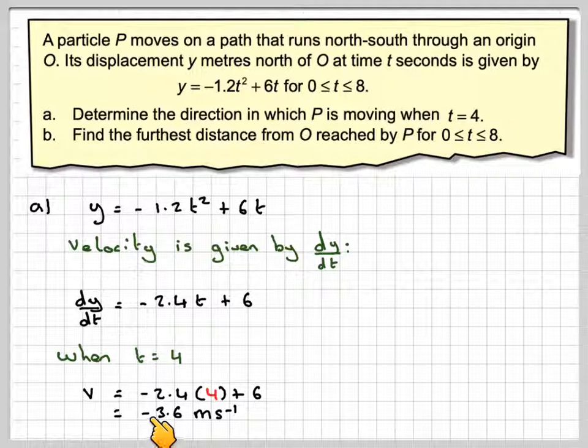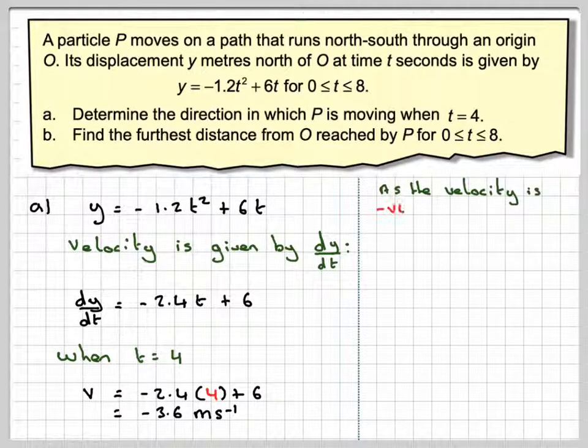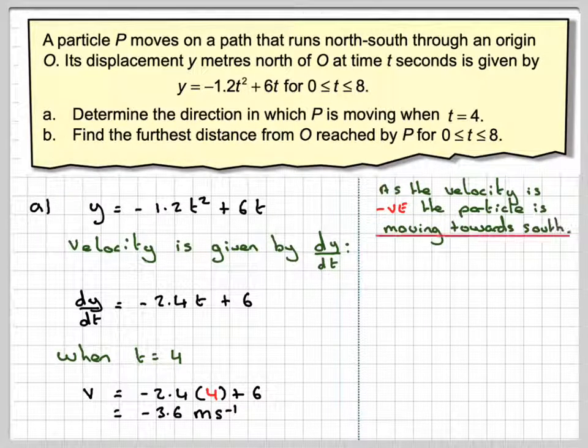But the important thing here is the minus sign. The velocity is in the negative direction. So as the velocity is negative, the particle is moving towards south.